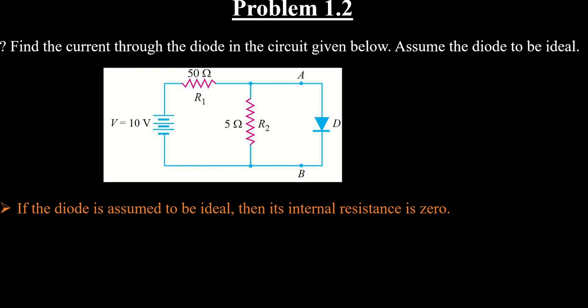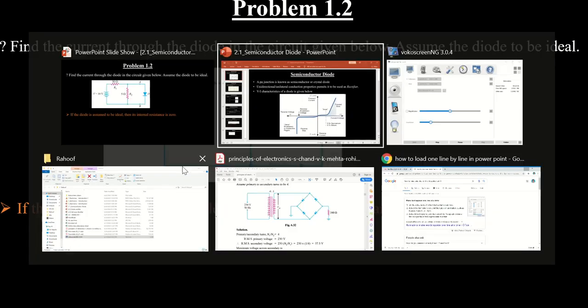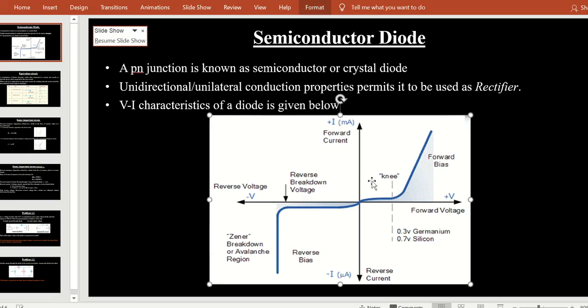If the diode is assumed ideal, take V0 = 0 and forward resistance = 0, and find the same values. The second problem gives a circuit and asks for the current through the diode, assuming the diode is ideal. Hint: if the diode is ideal, the current through the 5-ohm resistor will be zero, and whatever current is drawn from the battery flows through the diode. Submit both problems within half an hour.